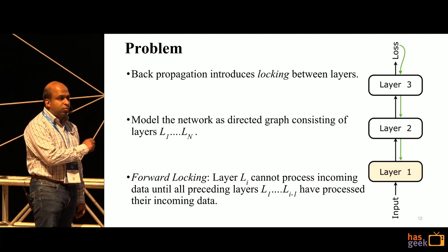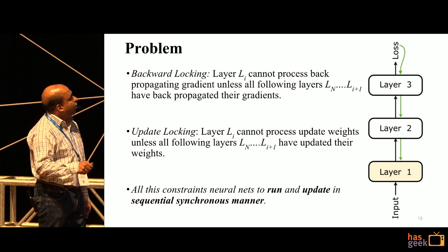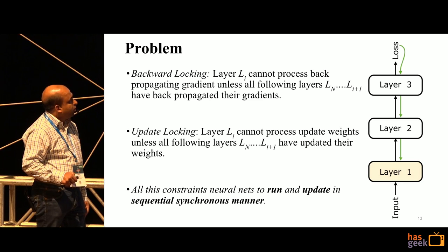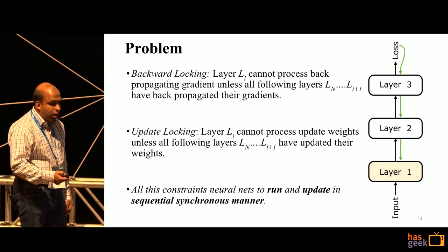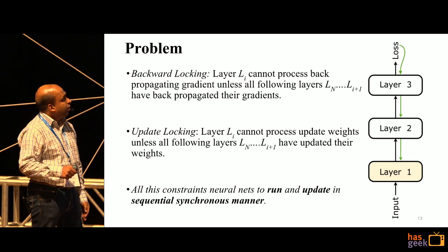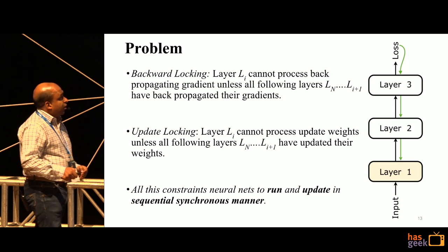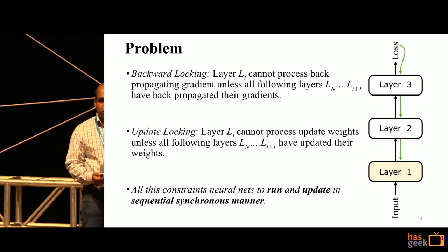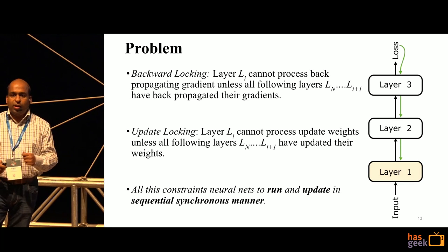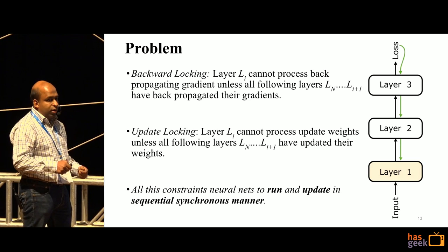This is what we call forward locking. Similarly, for backward locking: we compute the loss, get the gradients, and percolate them back through the layers. In order to know the error at layer i, I need to wait for the error signal from L_{i+1}, which in turn waits for L_{i+2}, all the way to L_n. This is backward locking.